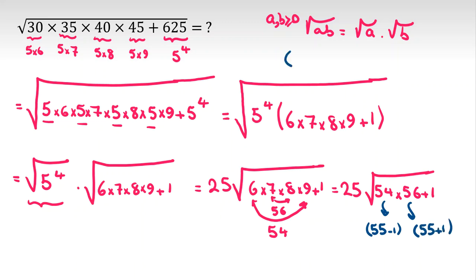And I know one important identity that x minus y times x plus y is x squared minus y squared, so much useful. If I apply it here, it will be 25 times square root of 55 squared minus 1 squared plus 1. So it will be plus 1.